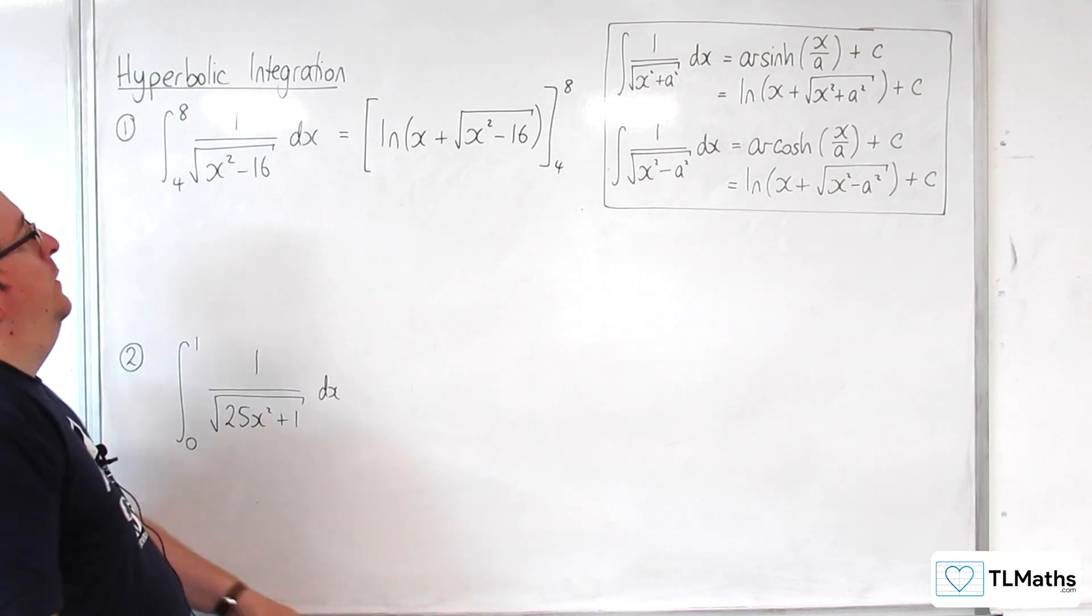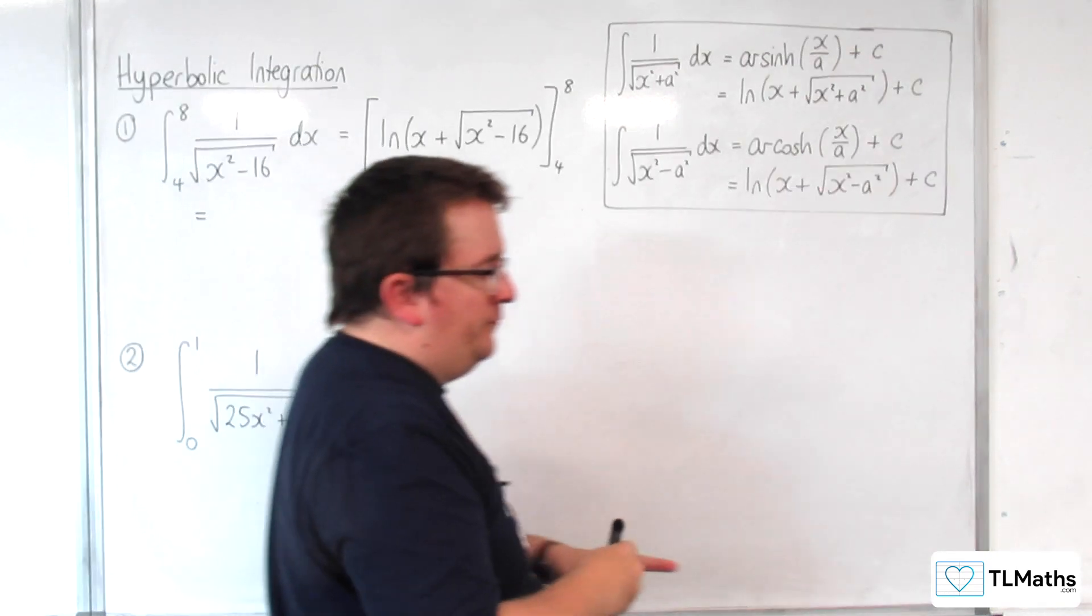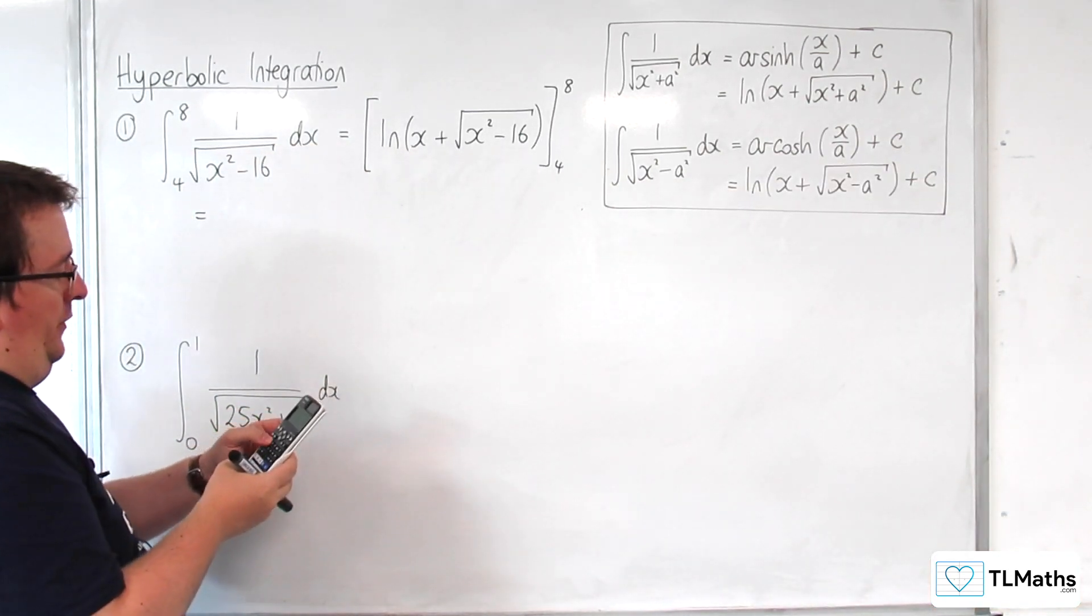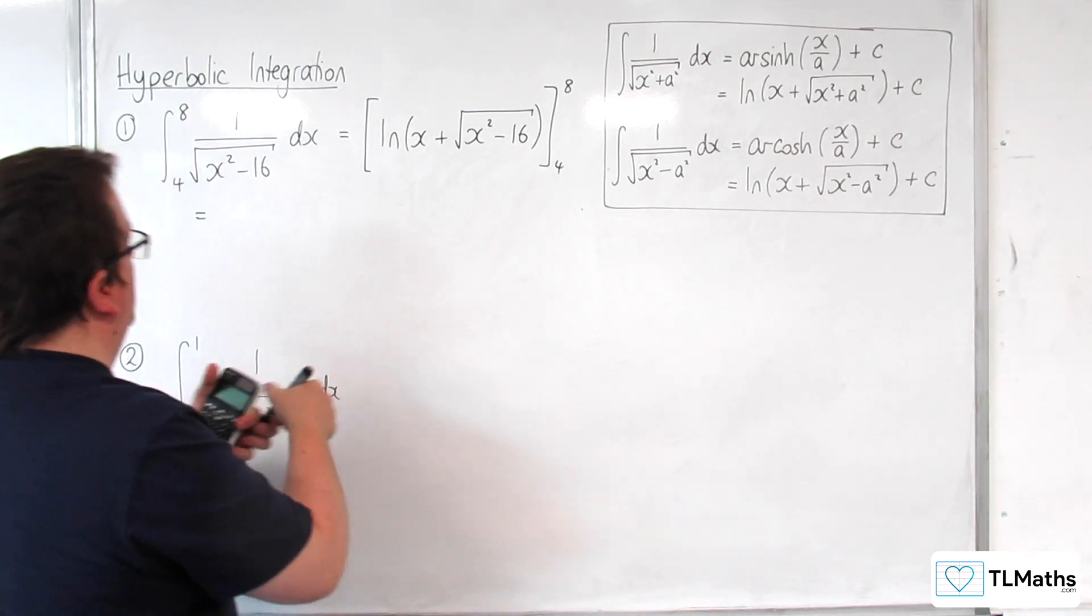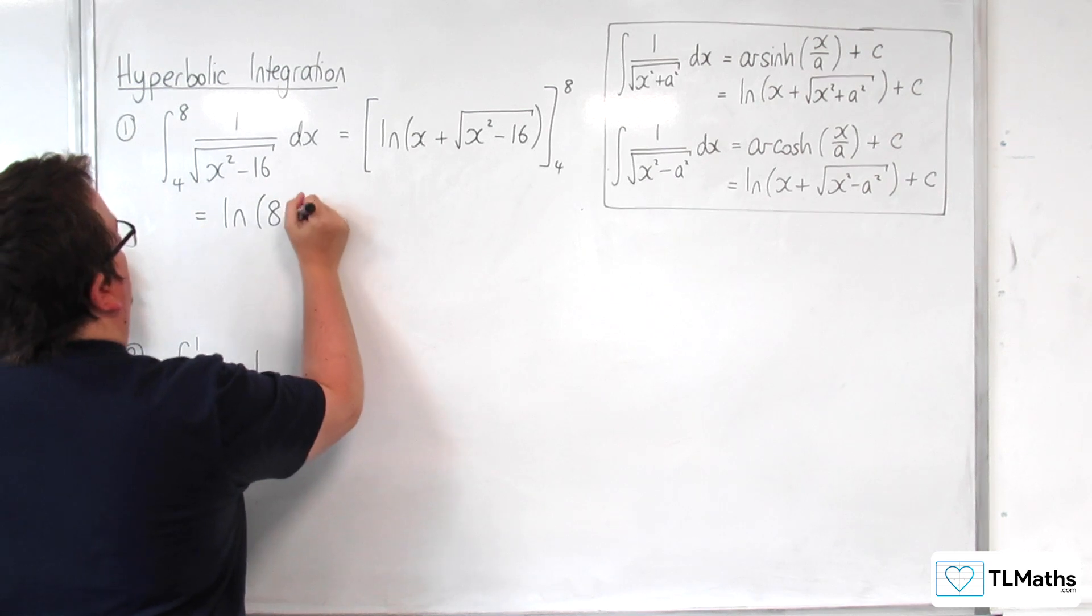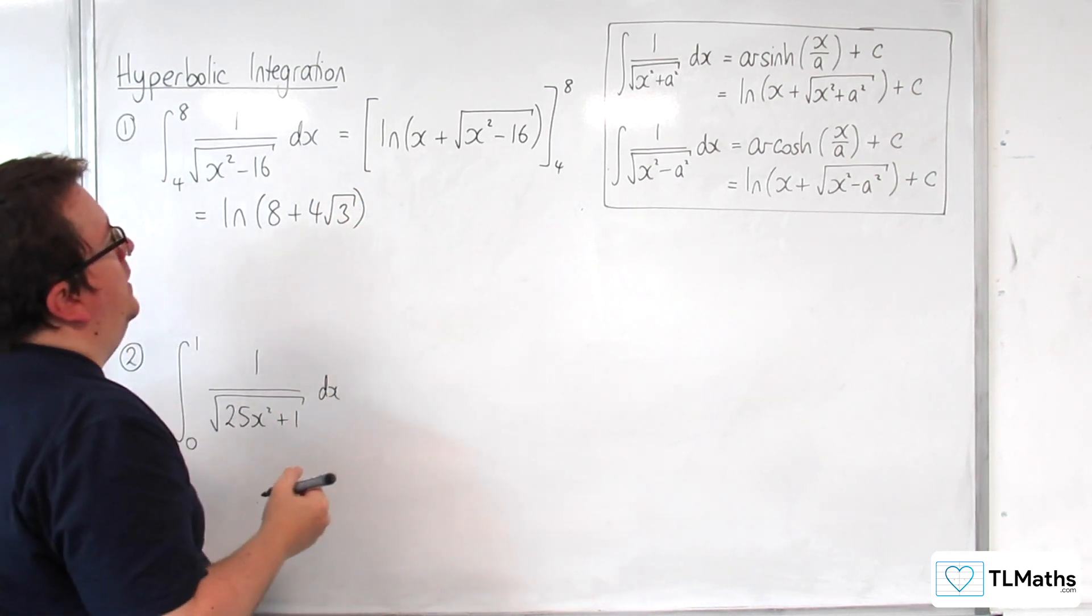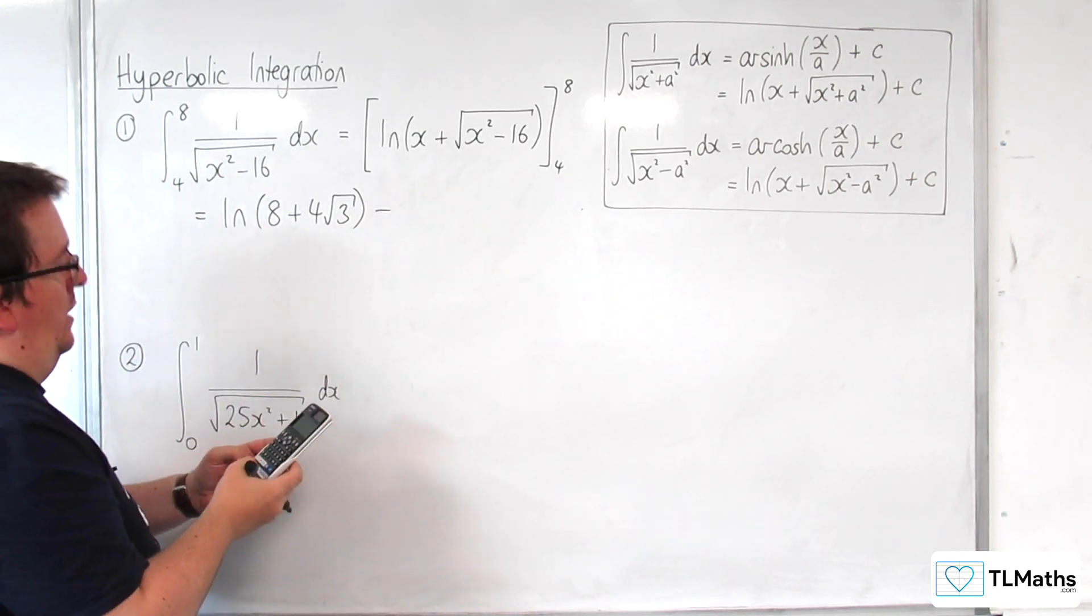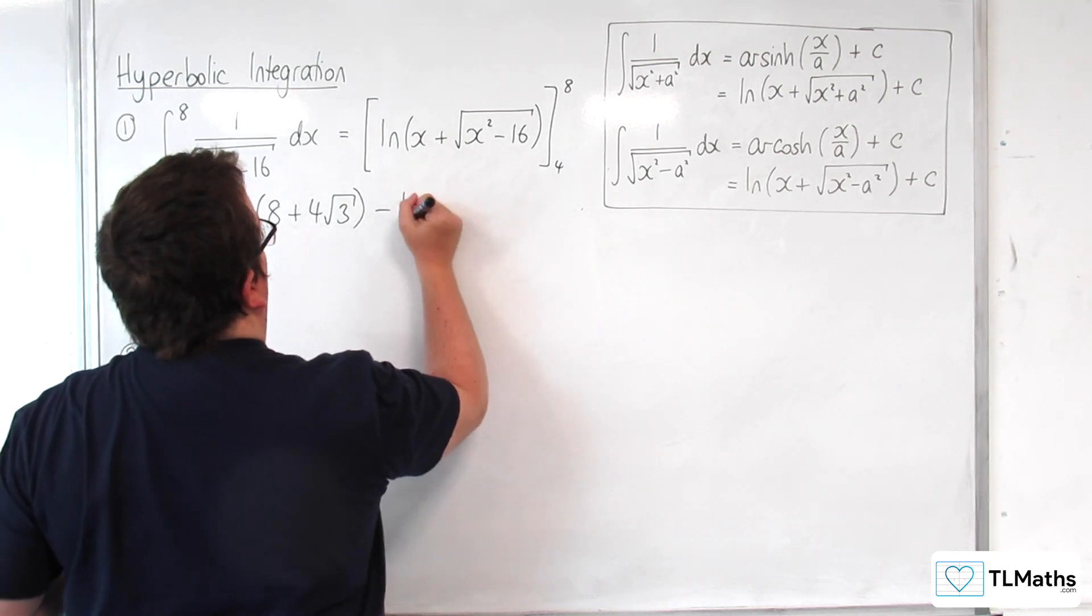So we're going to substitute in the 8. 8 plus the square root of 8 squared minus 16 gets us the natural log of 8 plus 4 root 3. Then we substitute in the 4: 4 plus the square root of 16 minus 16, so we get log of 4.